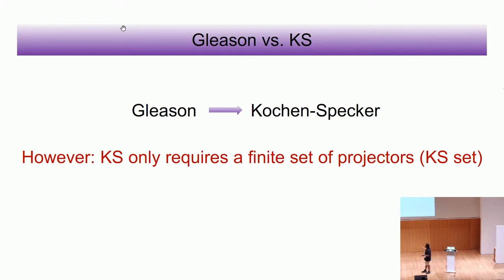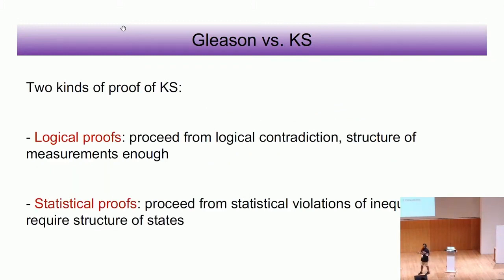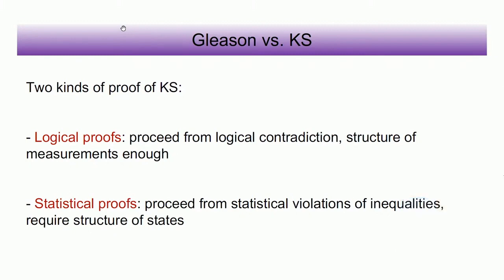The reason people care about Kochen-Specker is that you can prove it with a finite set of projections, not the full projection lattice. In the literature there are broadly two types of proofs. The first is logical proofs, which proceed from a logical contradiction — the mere structure of measurements is enough to rule out the existence of map C. The second is statistical proofs, which proceed from statistical violations of inequalities and require the structure of states — morally similar to Bell experiments.